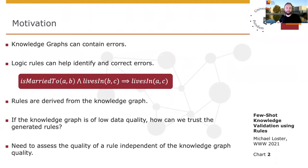These are typically rules like the ones shown here, which state that if A is married to B and B lives in C, then A must live in C as well. The application of such rules allows us to add missing, remove violating, or fix incorrect entries in the knowledge graph.